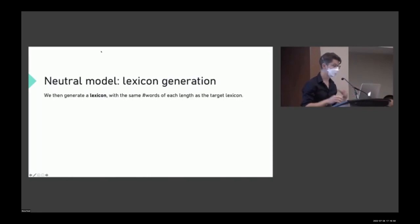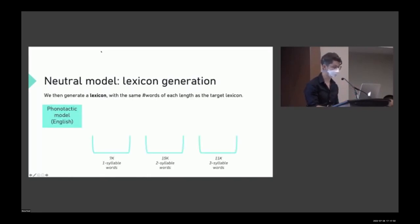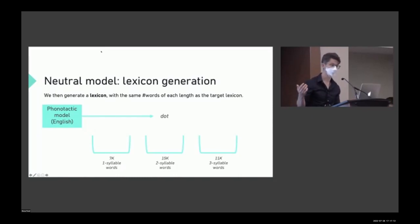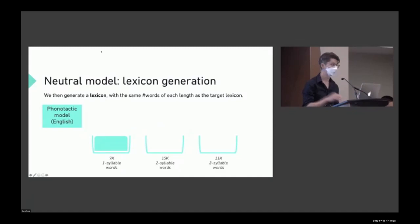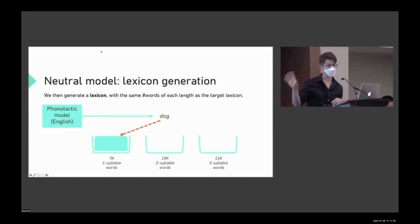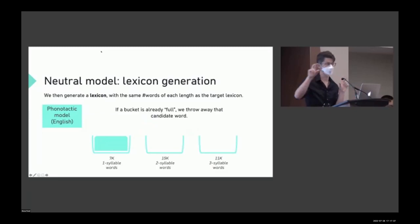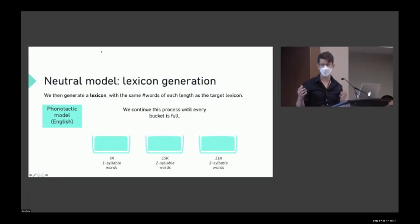Given this phonotactic model, we generate a lexicon with the same number of words of each length as the target lexicon. We generate a candidate word, check whether we need more words of that length, and if so add it to that bucket — for example, 7,000 one-syllable words, 15,000 two-syllable words, and 11,000 three-syllable words. If we generate a word for a bucket that's already full, we throw it out. We continue until every bucket is full, then analyze properties of this lexicon and compare it to the real lexicon.